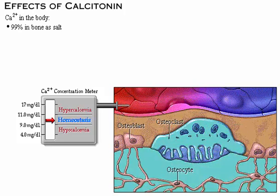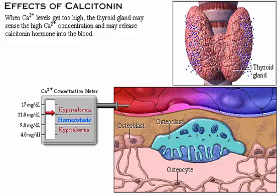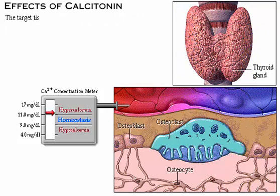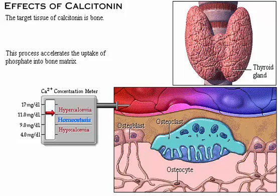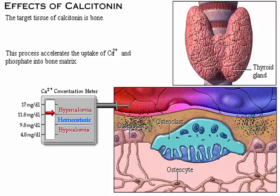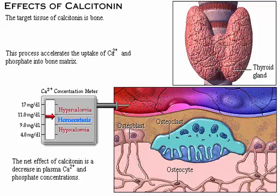Approximately 99% of the calcium in the body resides in bone as a salt, and about 1% is dissolved in the extracellular fluids. When plasma calcium levels get too high, the thyroid gland may sense the high concentration and release calcitonin into the blood. Calcitonin inhibits osteoclasts, which break down bone, and stimulates osteoblasts, which cause bone formation. This accelerates uptake of calcium and phosphate into bone matrix. The net effect of calcitonin is a decrease in plasma calcium and phosphate concentrations. Calcitonin appears to be a hormone more important in children than adults.